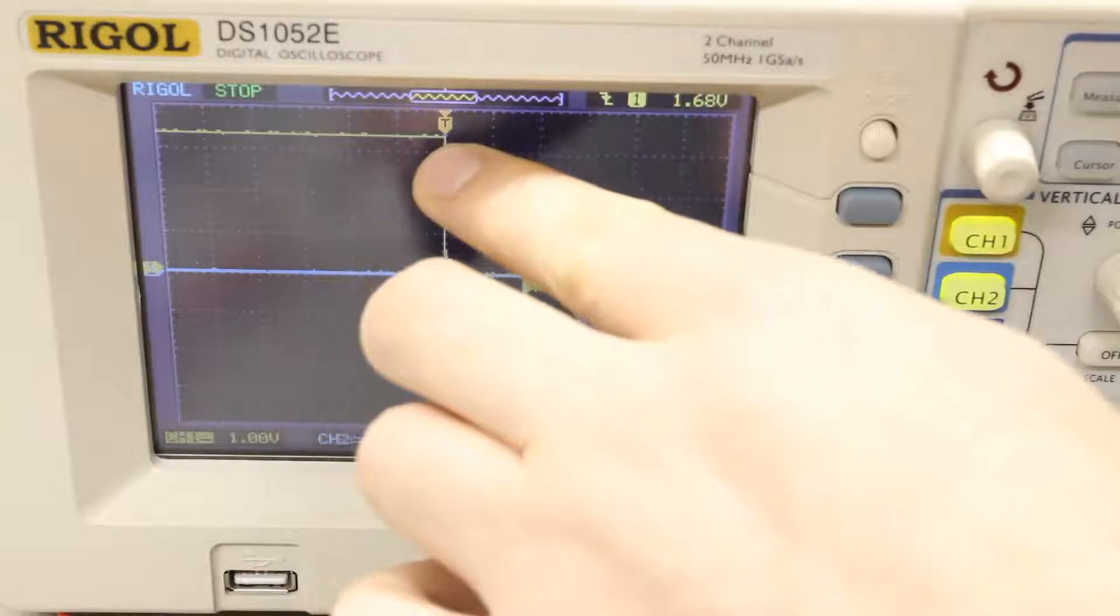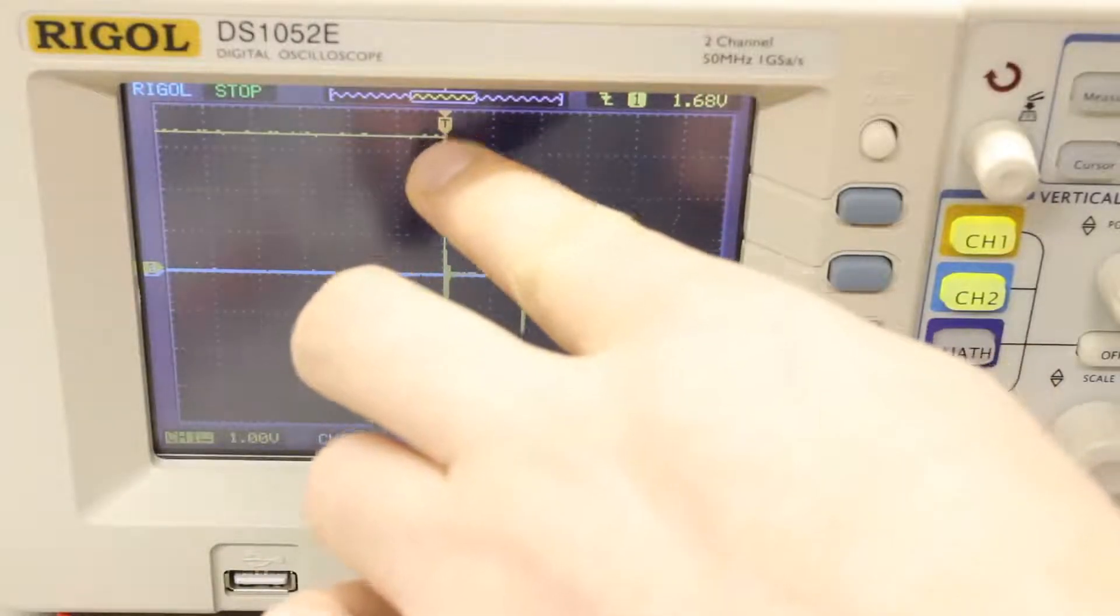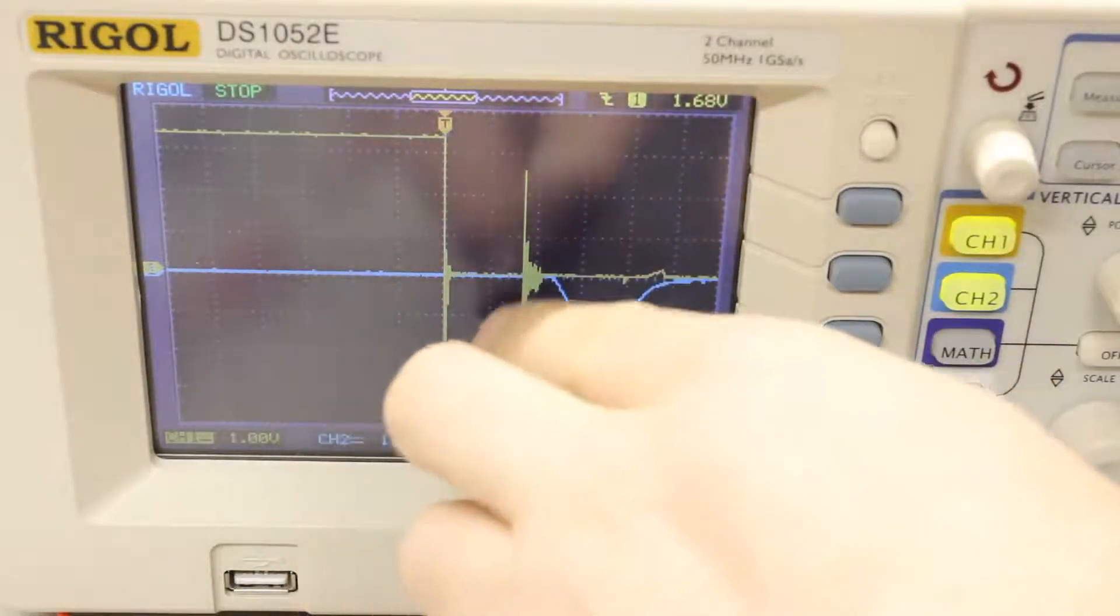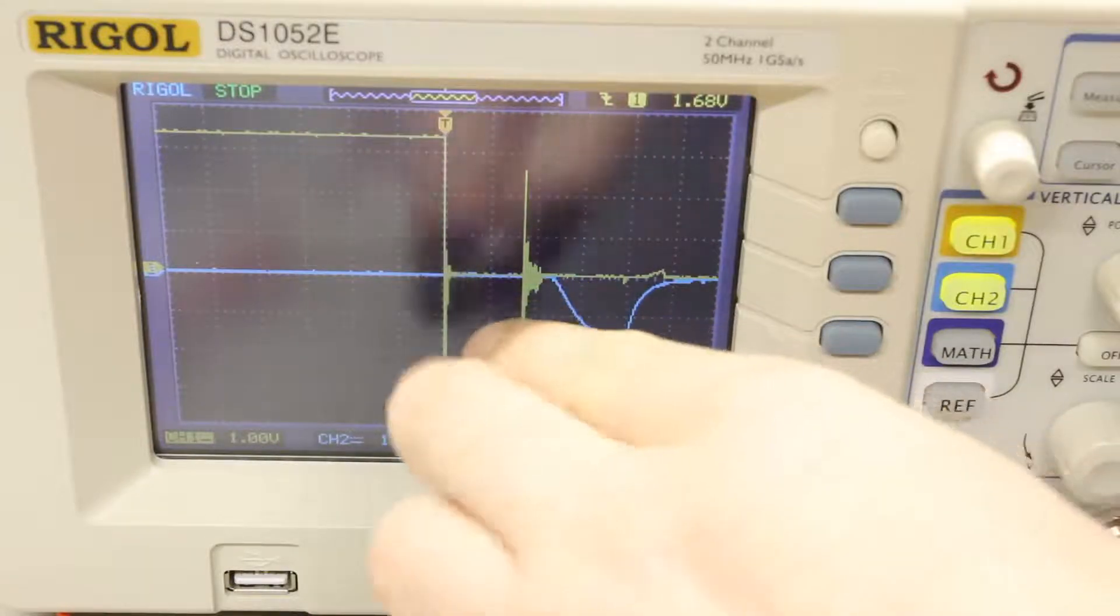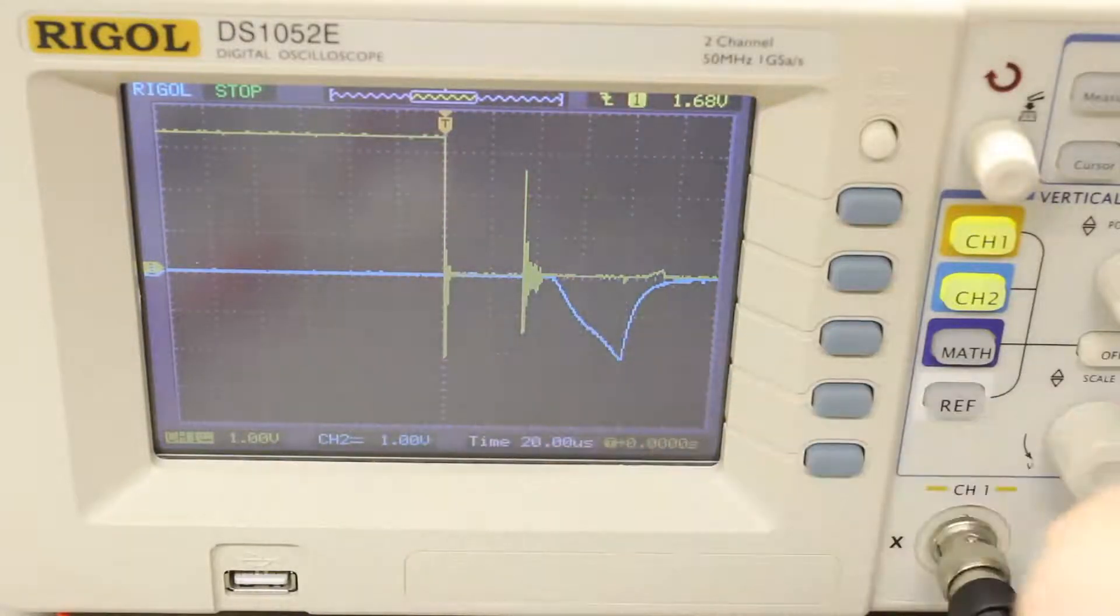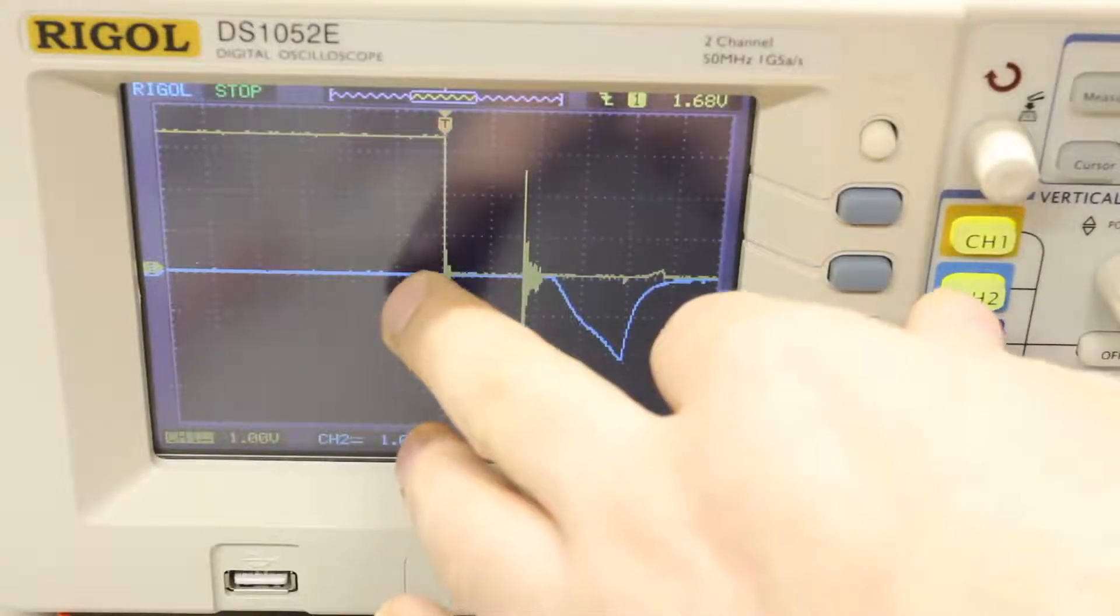So here's a close-up of the scope. The yellow line is the input voltage to the flash, so this indicates that the trigger happened here where voltage went from high to low at this point. There's also some noise on the trigger voltage, but just ignore that. That's part of how the flash is designed, so it's pretty irrelevant here.